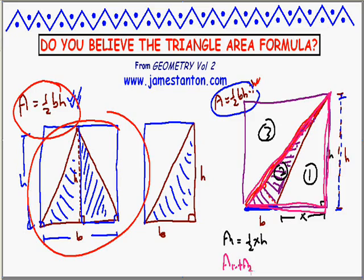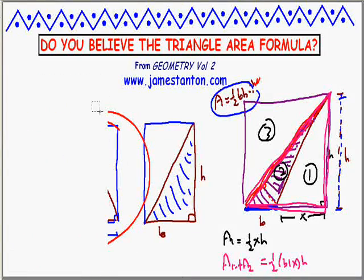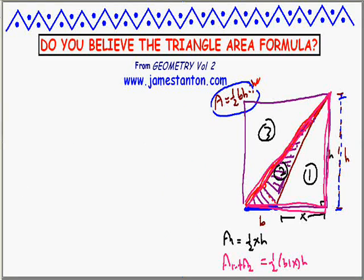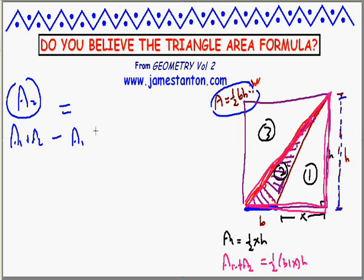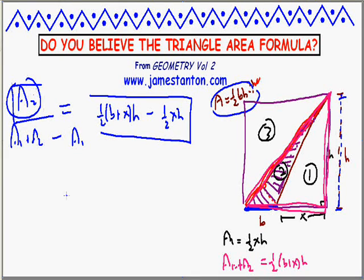Area one plus area two together is actually half its base — which is b plus x — times its height h. So the area I want, area two, equals area one plus area two, minus area one: that gives us half of (b plus x) times h, minus half x times h. There is the formula for area two.